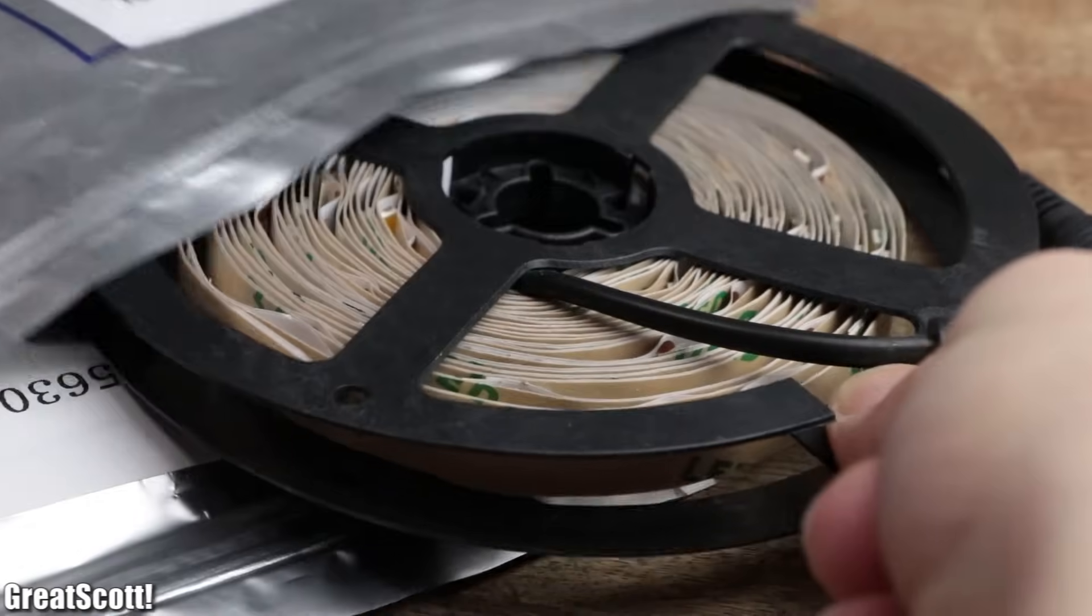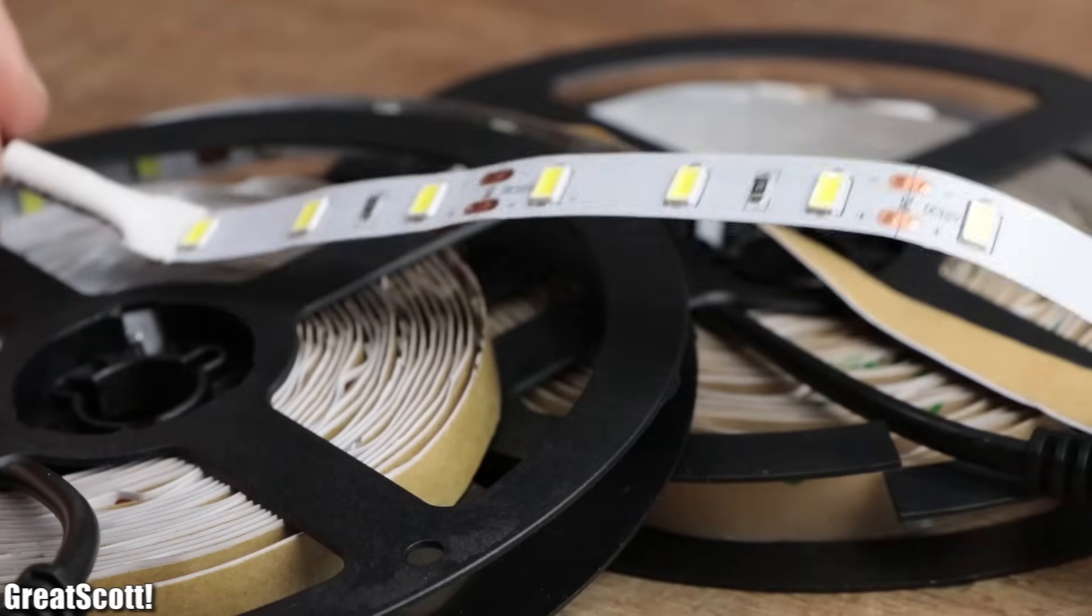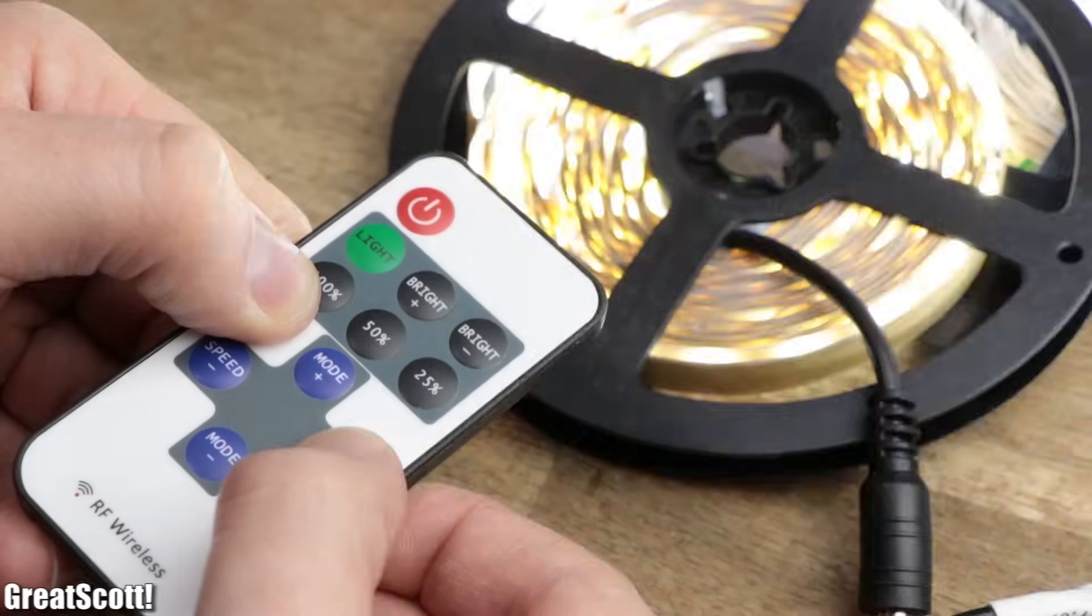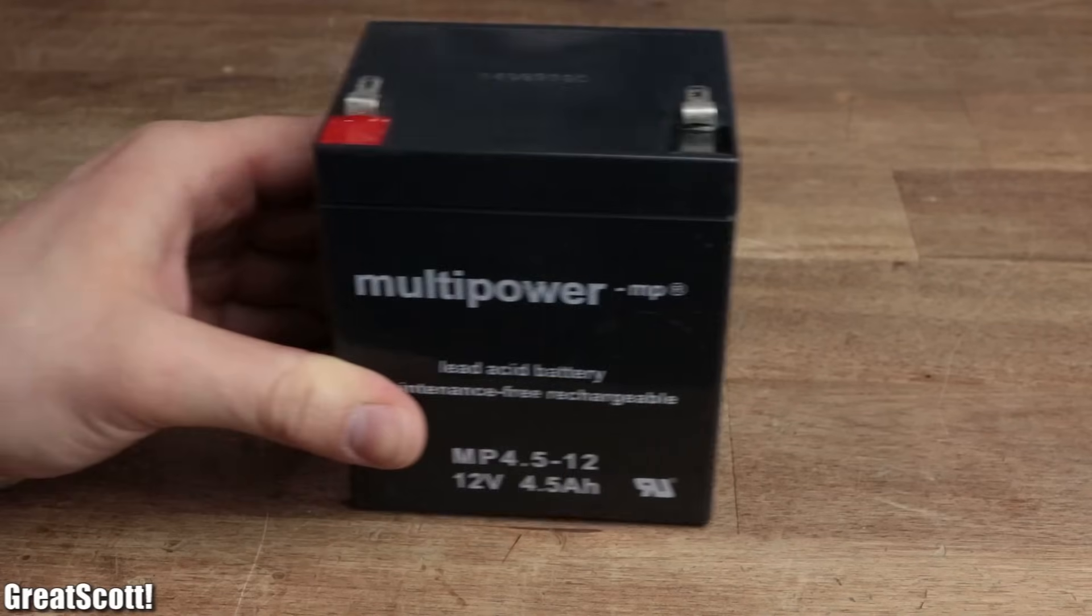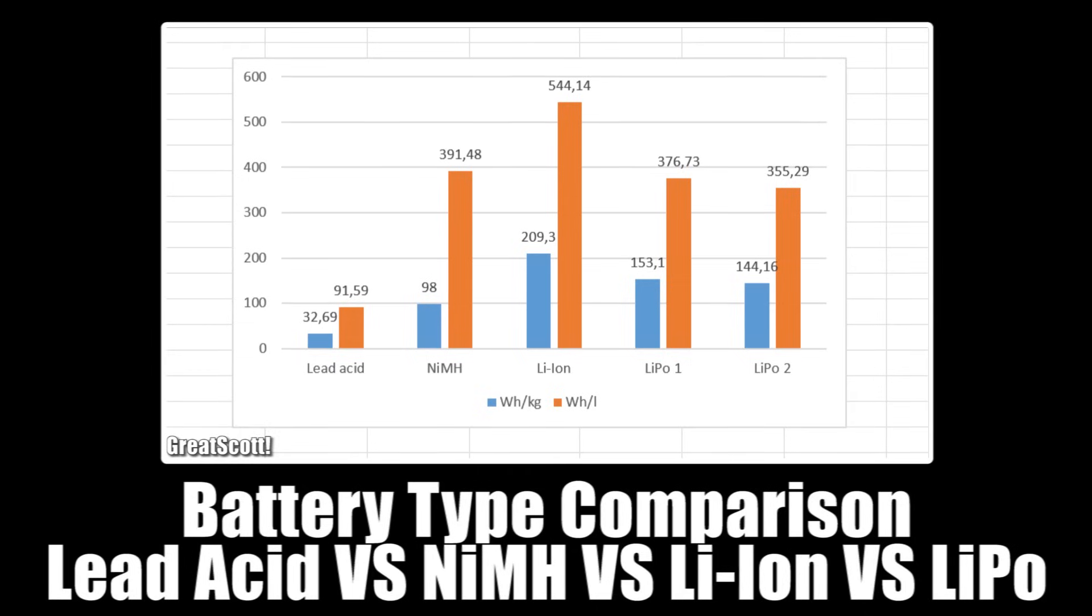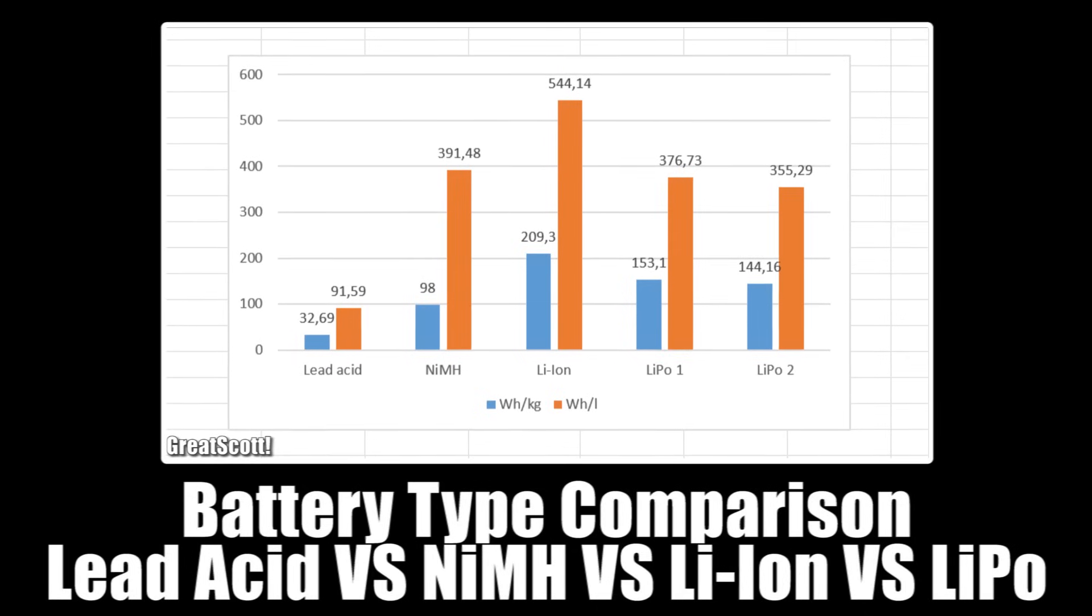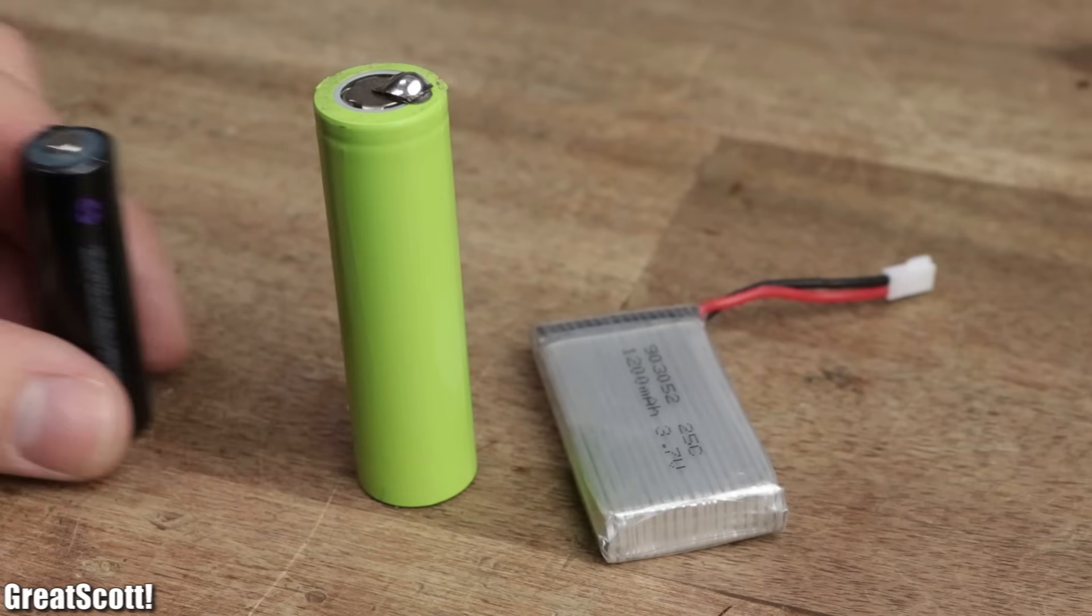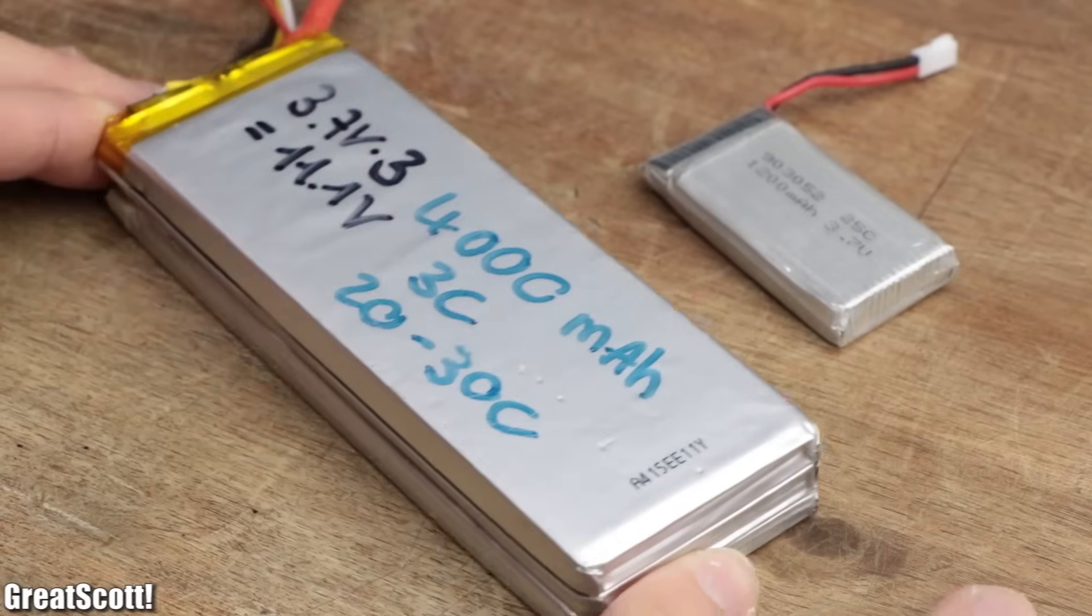I recently got myself two spools with five meters of white LED strip that I want to utilize in a future portable lighting project. So once again, it was time to choose a suitable battery type. Due to the superior gravimetric and volumetric energy density, I wanted to either use lithium polymer or lithium-ion.